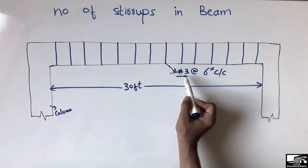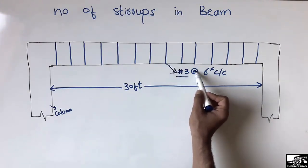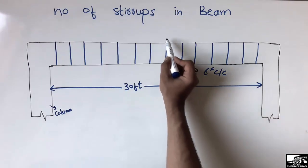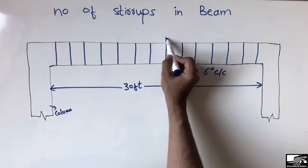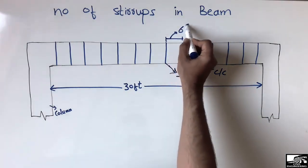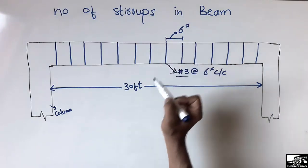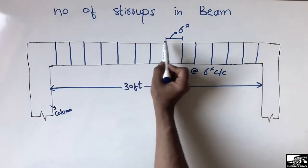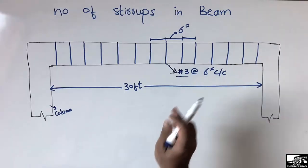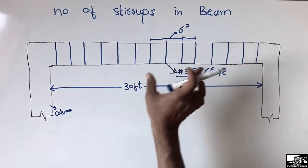The stirrups used here are number three bars, and they are placed at a distance of six inches center to center. This means the distance between each stirrup is six inches — from one stirrup center to the next stirrup center — throughout the length of the beam.